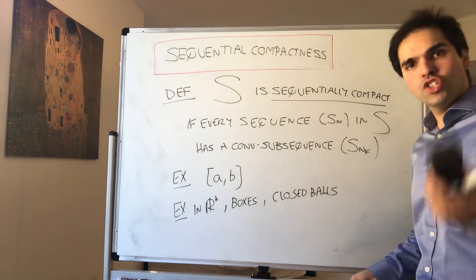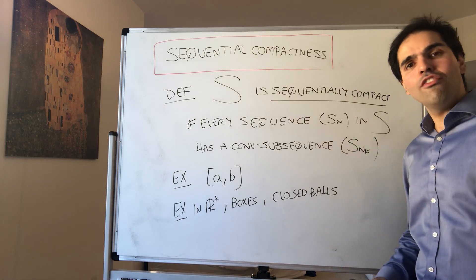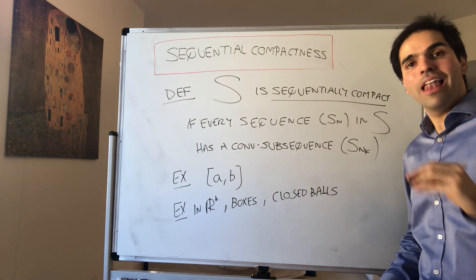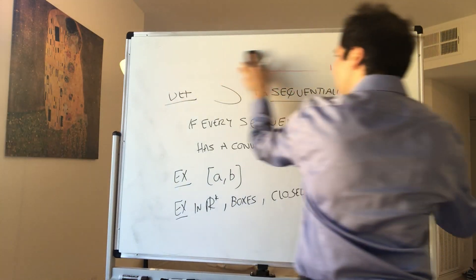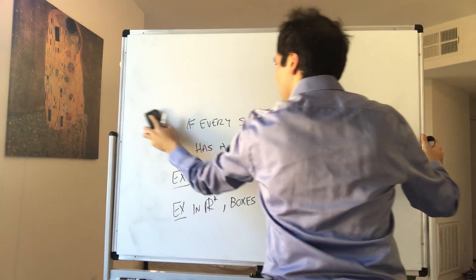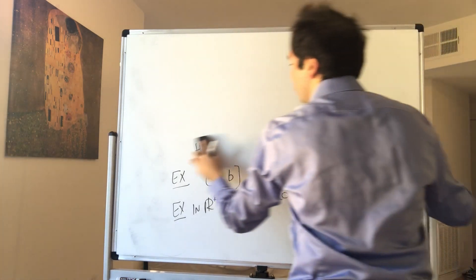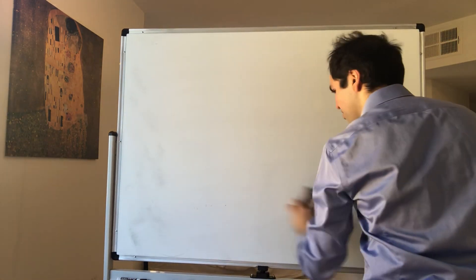And today, what I want to show you is that covering compactness implies sequential compactness. The other way is correct as well, but it's way harder to show. So, go.